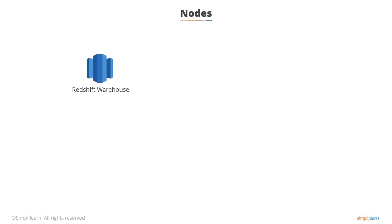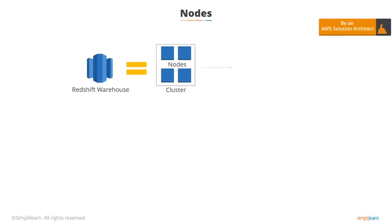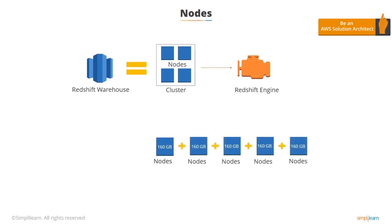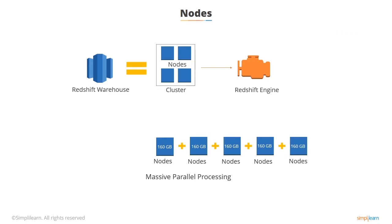An Amazon Redshift data warehouse is a collection of computing resources called nodes, and these nodes are organized into a group called a cluster. Each cluster runs an Amazon Redshift engine that contains one or more databases. When you first launch Amazon Redshift, you can start with a single node at 160 gigabytes in size. Then as you grow, you can add additional nodes to take advantage of massive parallel processing and operate in multi-node mode. In multi-node mode you have a leader node which manages all the client connections, and then the compute nodes which store data and perform queries and computations. You can have up to 128 compute nodes.